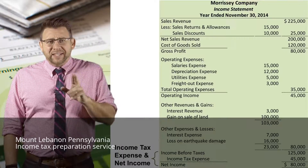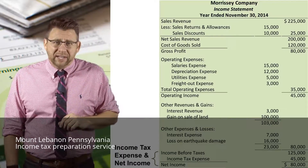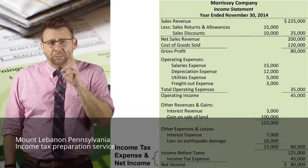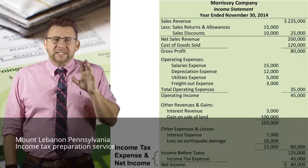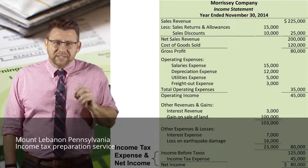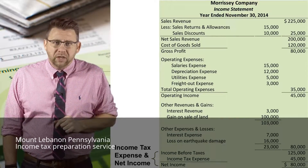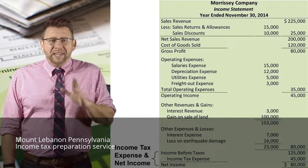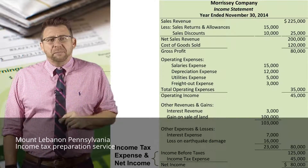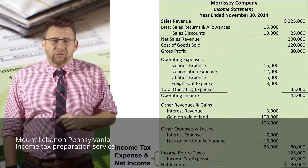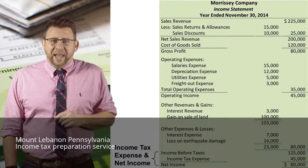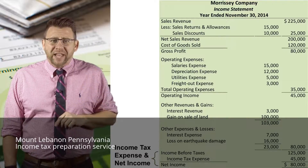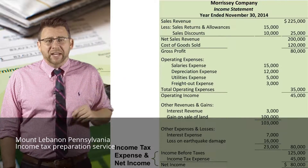The final section before we arrive at net income — or at least the final section for an accounting principles course — is the income tax expense section. This expense is reported separately from all other expenses because it's the expense that managers have the least control over. So income tax expense is deducted from income before taxes to arrive at net income.